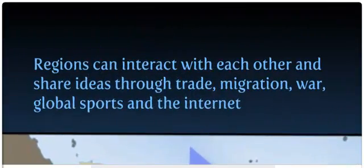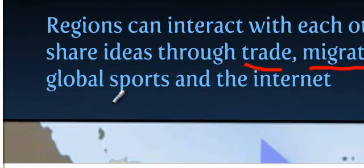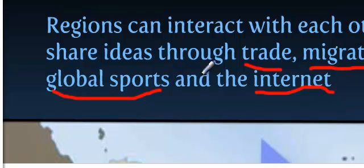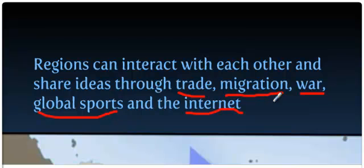Regions interact with one another. People move because of trade and share ideas because of trade. They also migrate, make war on one another, compete in global sports, and engage on the internet. Anything that involves communication, trading, and the transfer of ideas and people from one region to another is spatial diffusion.